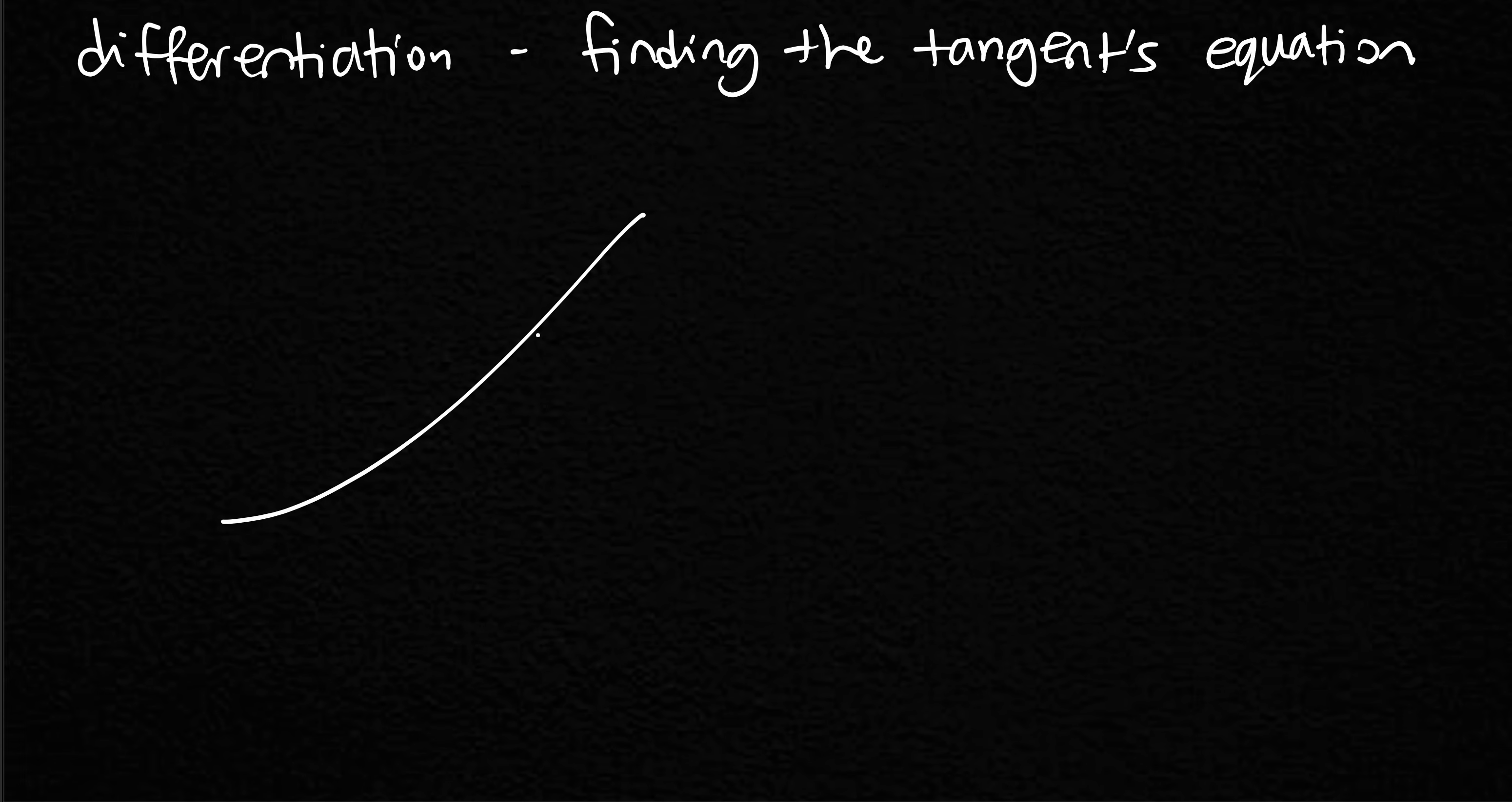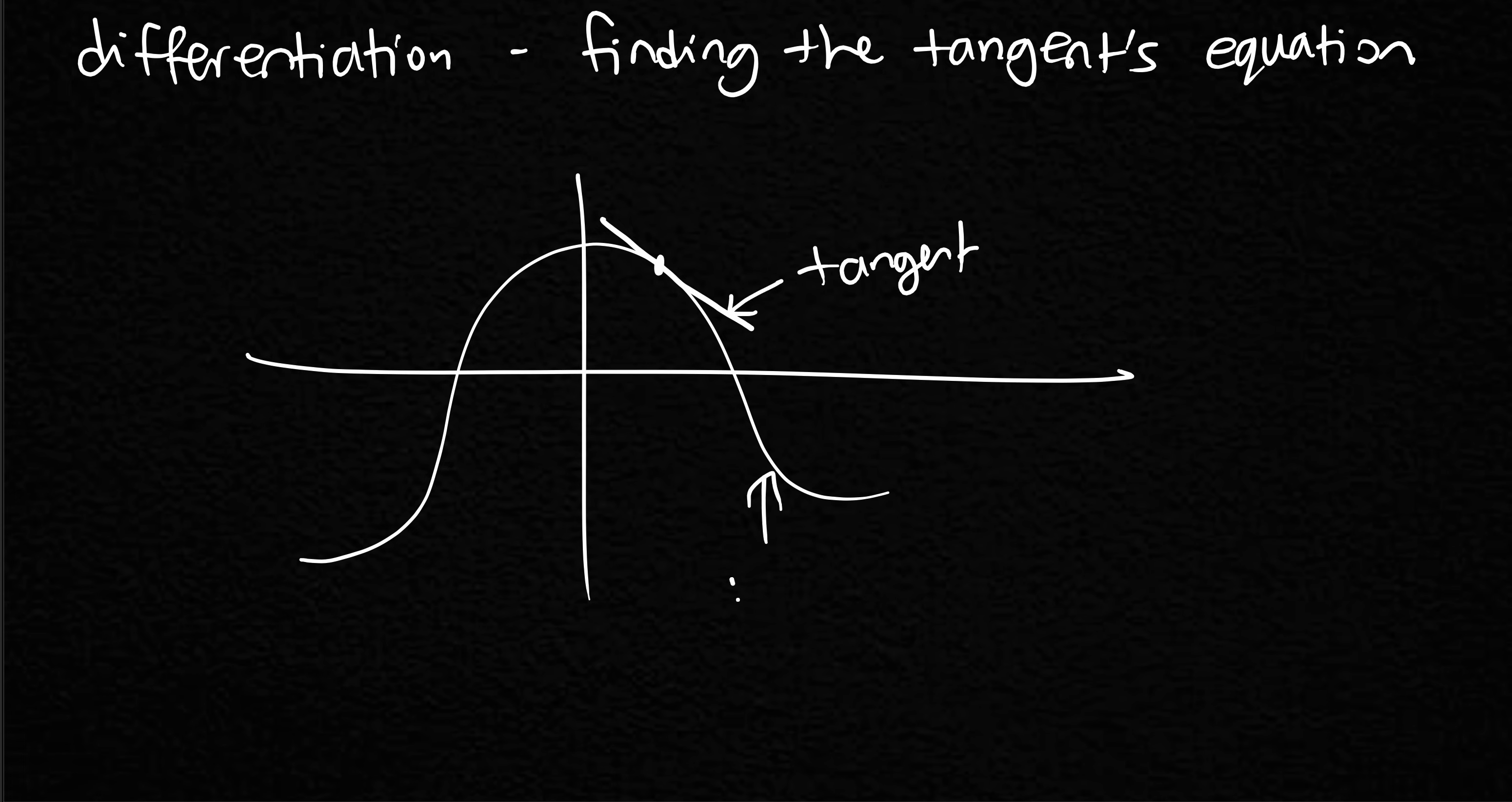In case you forgot, a tangent is if you say we have a curve like so, X and Y, and if we have a point, say here, a tangent is a straight line that basically just touches the point, that exact point. So this line here, this is going to be the tangent to the curve.